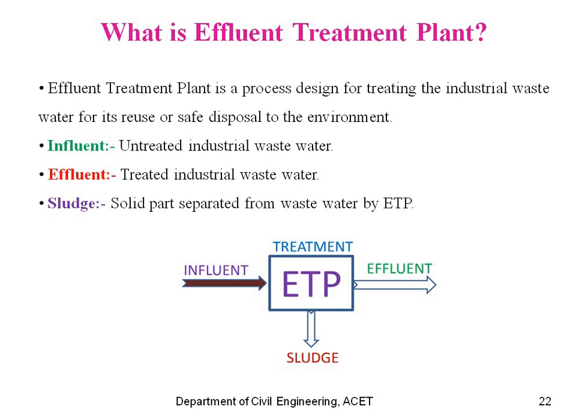First, untreated industrial water is collected, then the treatment is done. After treatment, the treated water is separated from the remaining sludge. Sludge is the waste material which is collected, and the treated water is then transmitted to the areas where water is needed. This is the flow diagram: untreated effluent water goes in, treatment is done, sludge is collected, and treated water is distributed.